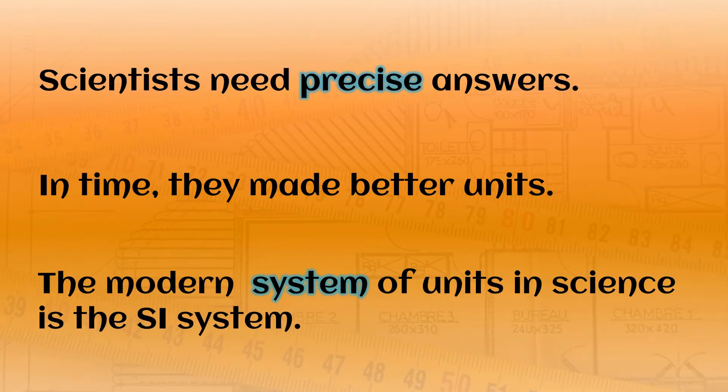What we know about science today means that scientists need precise answers. They need to be very exact in their numbers. So over time, we have made better and better units. The modern system of units that we use in science is the SI system of units.